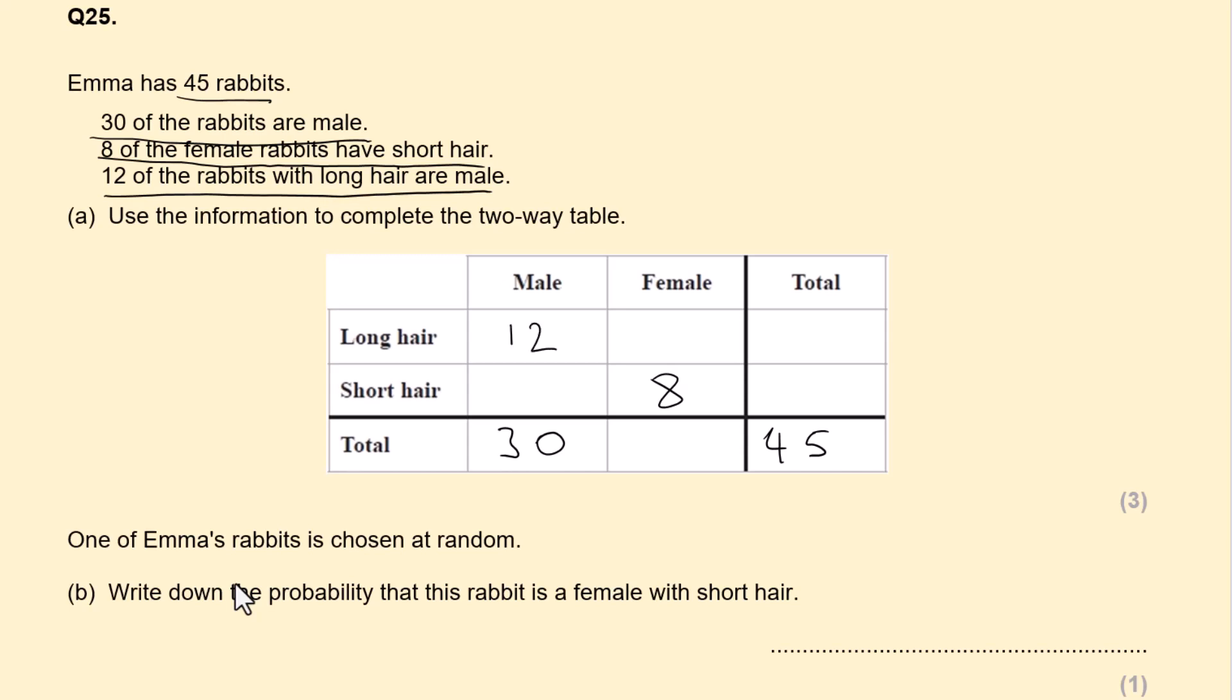When you do two-way tables, just find whether there is one gap. So 30 take away 12. That would give us 18. And we can find out the female by taking away male from the total. 45 take away 30 is 15. We can find the long hair female, 15 take away 8, which is 7. Now 12 add 7 is 19. 18 add 8 is 26. Just double check. 9 add 6 is 15. Carry the 1. 2 add 1 is 3. Add 1 is 4. And this is worth 3 marks. 3 easy marks.